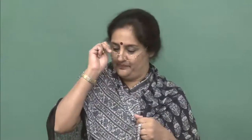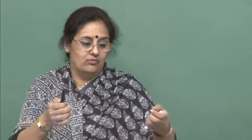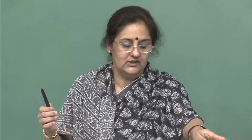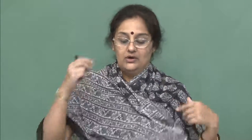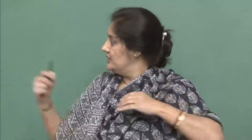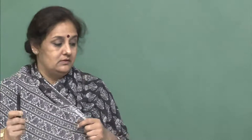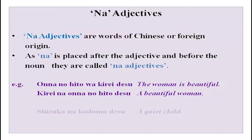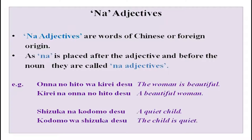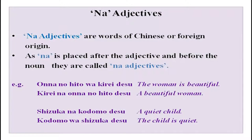Kodomo wa genki desu — the child is very happy and healthy. Genki na kodomo desu — the child is very happy and in good health. Another example: shizuka na kodomo desu — he is a quiet child. Kodomo wa shizuka desu means the child is quiet right now. But shizuka na kodomo desu means he is generally a quiet child. That is the difference, though in broad meaning it does not change much. Please remember: with na-adjectives, when you have adjective before noun, na is going to be used — that is very important.